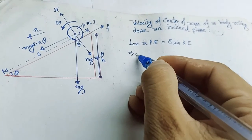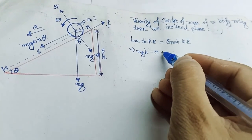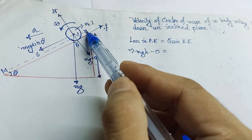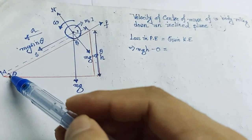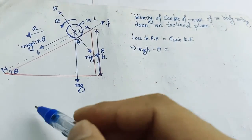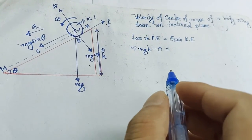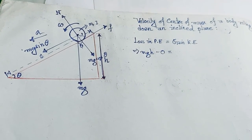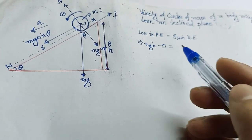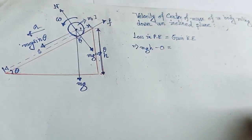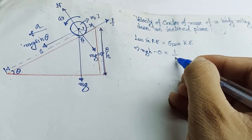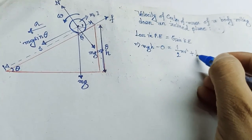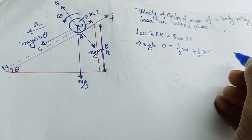The total kinetic energy — when it is at the topmost position its kinetic energy is zero, and when it reaches the bottom its total energy will be kinetic energy. As this is a rolling motion, there will be two types of kinetic energy: one is kinetic energy due to translation, which is half m v squared, and another is kinetic energy due to rotation, which is half i omega squared, where i is the moment of inertia.